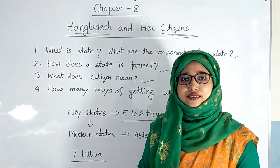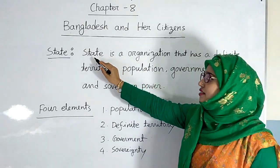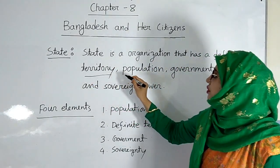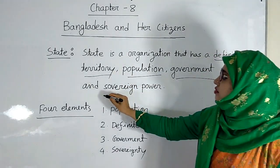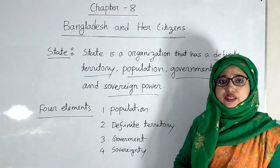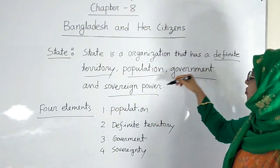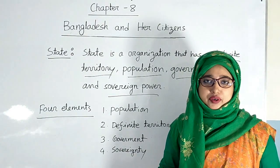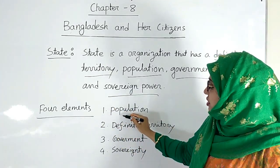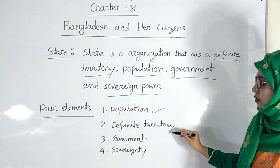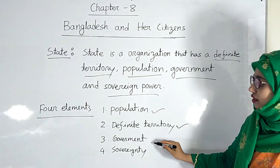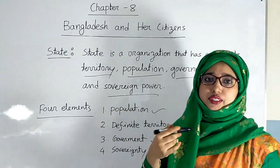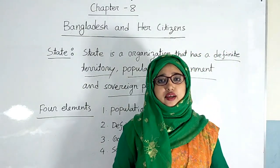Everybody write in your copy. What is state? State is an organization that has a definite territory, population, government and sovereign power. We see that there are four components to form a state. Without any one of them, a state cannot be formed. The four elements of state are: population, definite territory, government, and sovereignty. Now I am going to discuss the components of the state elaborately.